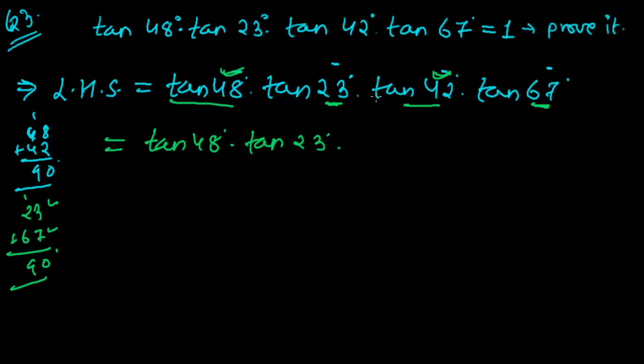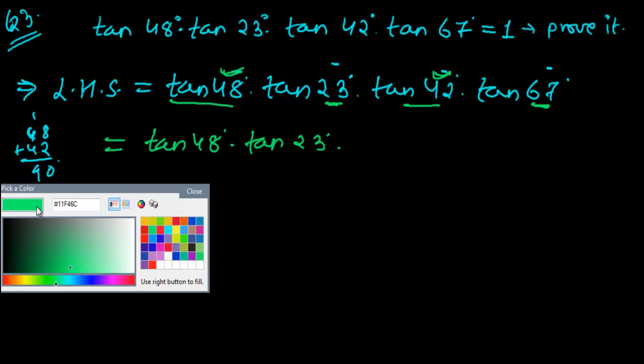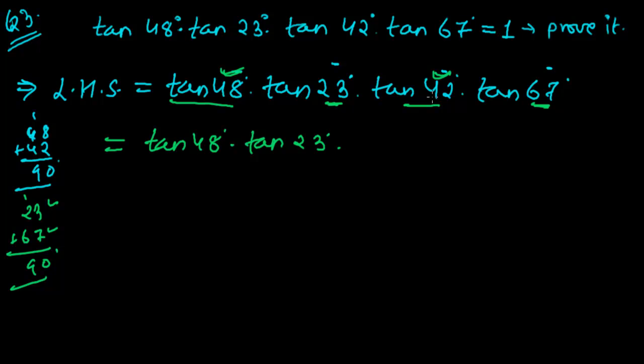Now I'm changing this part, the tan 42°. I can change tan 42° as tan(90° - 48°), because 90 minus 48 is 42. And tan 67° is tan(90° - 23°).